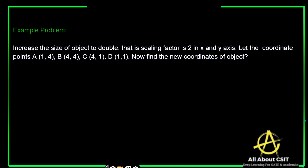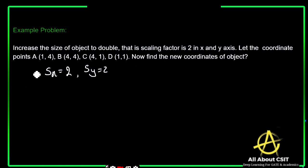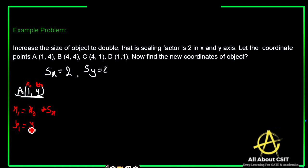Let's solve a problem. We want to increase the size of an object to double, so the scaling factor is sx = 2 and sy = 2. The coordinates of the polygon are: A(1, 4), B(4, 4), C(4, 1), and D(1, 1). Find the new coordinates. For point A(1, 4): x1 = x0 × sx = 1 × 2 = 2, and y1 = y0 × sy = 4 × 2 = 8. So A' (new coordinates) = (2, 8).